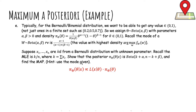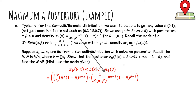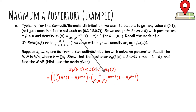The likelihood of observing k heads in n trials is the binomial PMF: C(n,k) · θ^k · (1-θ)^(n-k). The prior is our beta density. Dropping terms that don't depend on theta and combining like terms, we get θ^(k+α-1) · (1-θ)^(n-k+β-1). This is our posterior distribution up to a normalizing constant.